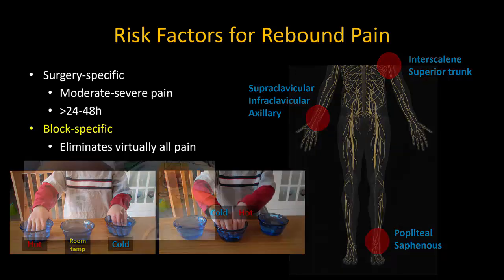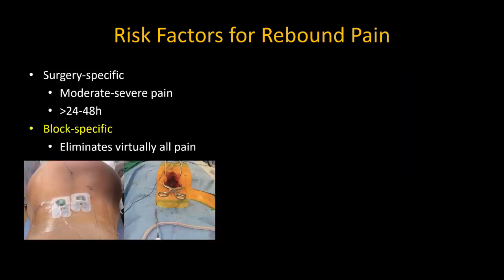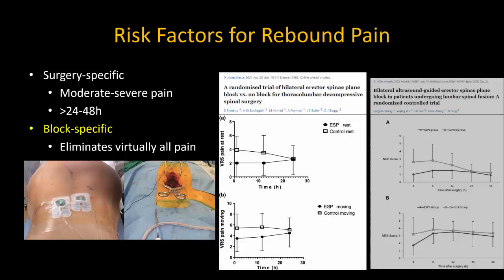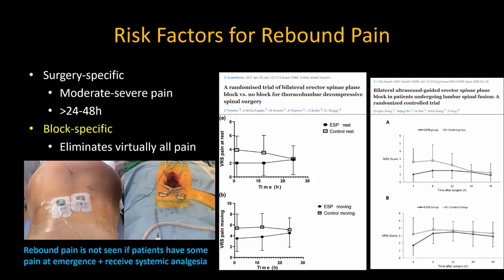If you look at something like lumbar spinal surgery, even though a technique like the erector spinae plane block works very well, it does not completely eliminate all of the pain. These RCTs show the block still significantly improves analgesia compared to no block at all, but because the patients wake up with some pain and start using some opioid almost immediately, there is no evidence of the sudden peak in pain intensity characteristic of true rebound pain. This also means that we should not feel too badly about imperfect or partial blocks — giving your patient a little opioid now may actually mean a smoother time down the road.